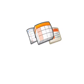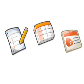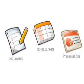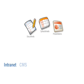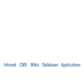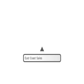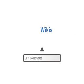Your company's information is stored in many formats, such as documents, spreadsheets, and presentations. And it's stored in a variety of places, such as an intranet, content management systems, wikis, databases, and software applications. This fragmentation of information leads to decreased productivity and uninformed decisions, as employees have to search each data silo independently.